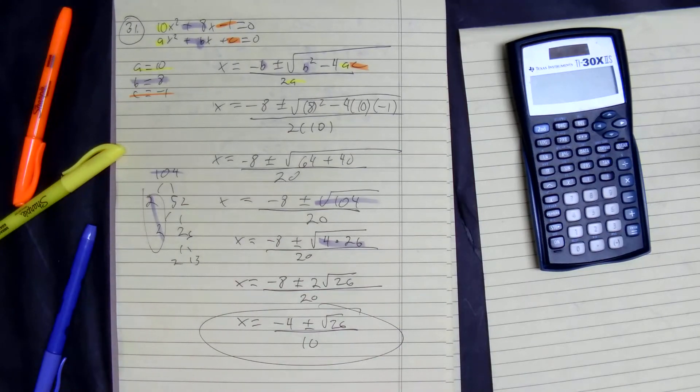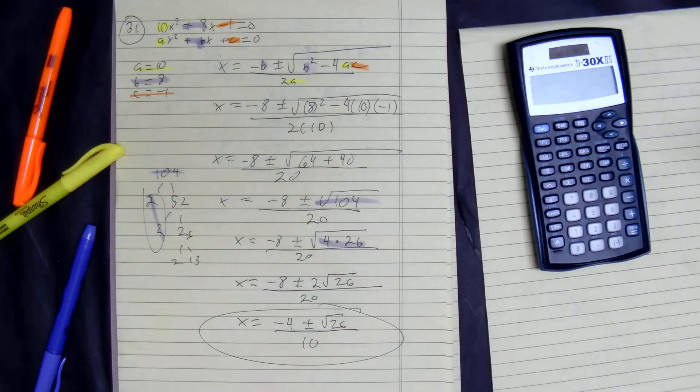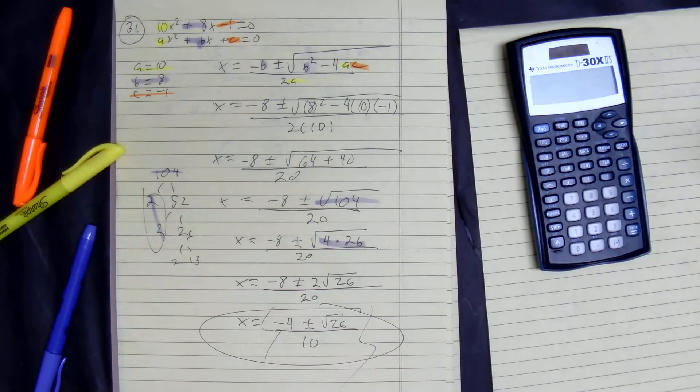This is the most simplified answer with a common denominator of 10, because you could technically simplify negative 4 and 10, but why do that when we have our answer? All right, perfect.